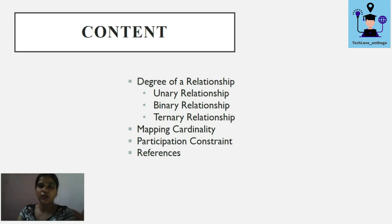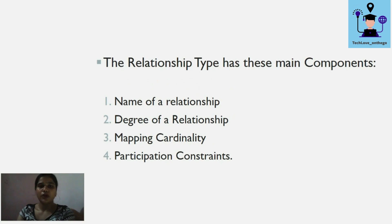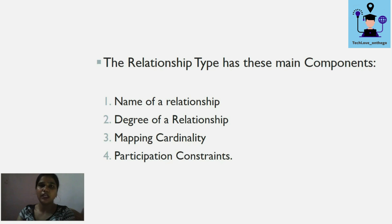Every relationship type has main components. The first is the name of the relationship, which we assign when designing the ER diagram. We also need to know the degree of the relationship — how many entities are participating — what is the mapping cardinality, and what is the participation constraint, describing the participation of those entities in the relationship.